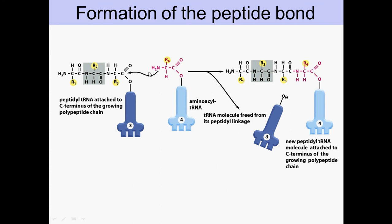During elongation, the electrons from the nitrogen perform a nucleophilic attack on the carbonyl carbon, and the chain grows in that direction. In formyl-methionine, the amino group is formylated, so formyl-methionine cannot be used to elongate the chain.